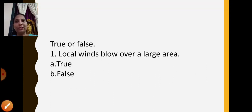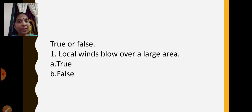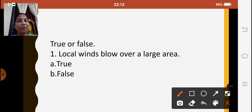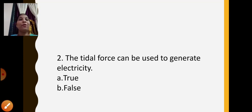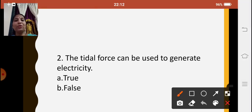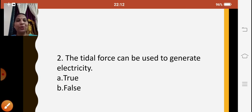The next question is true or false, where you pick true or false as options. First statement: 'Local winds blow over a large area.' Local winds blow over a specific or particular region, not a large area, so the answer is false. Second statement: 'The tidal force can be used to generate electricity.' Yes, we learnt about this in tides — tidal force can be used to generate electricity, so the answer is true.